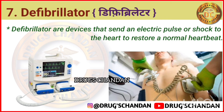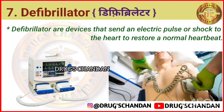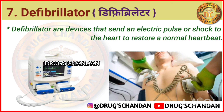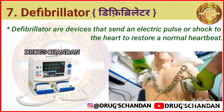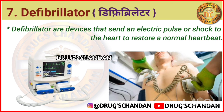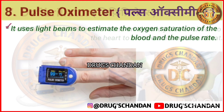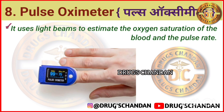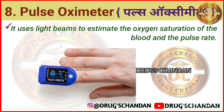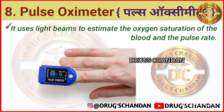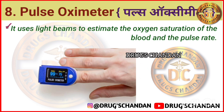Defibrillator. Defibrillators are devices that send an electric pulse or shock to the heart to restore a normal heartbeat. Pulse Oximeter. A pulse oximeter uses light beams to estimate the oxygen saturation of the blood and the pulse rate.